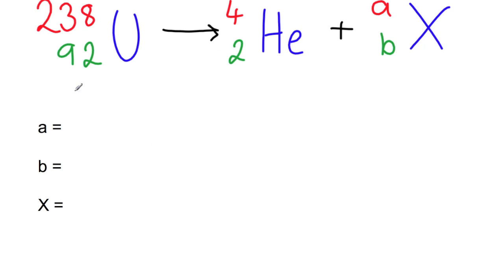So looking at the mass number, A is equal to 238 minus 4, as 4 plus A must equal to 238. So A is 234.